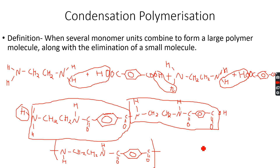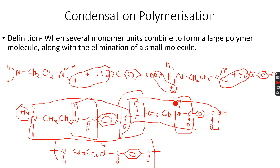This is called a polyamide because this is the amide group. This is the amide group, and N water molecules are released. It's called a polyamide because there are several amide groups linking these molecules together. So now we have done polyesters and we've also done polyamides — the two main types of condensation polymers we are going to be talking about.